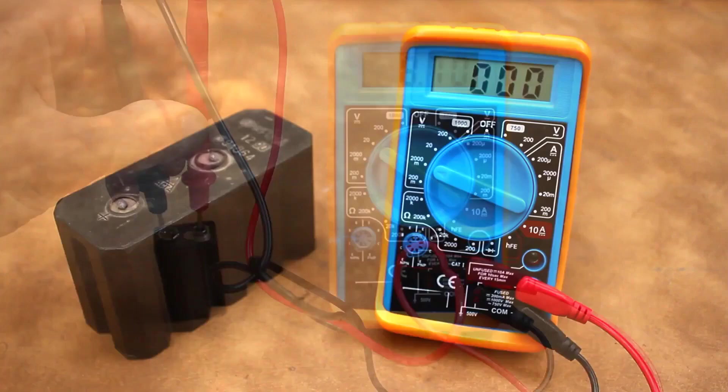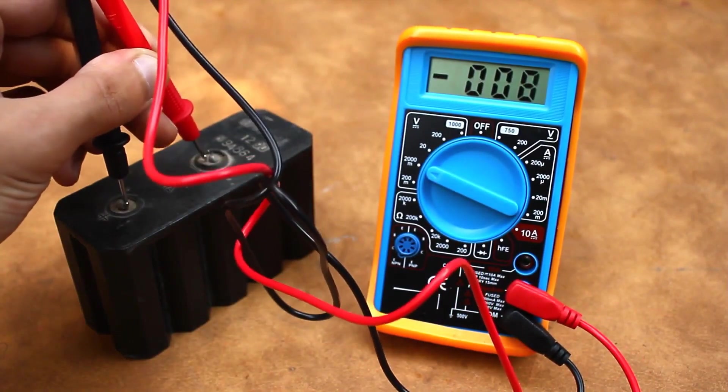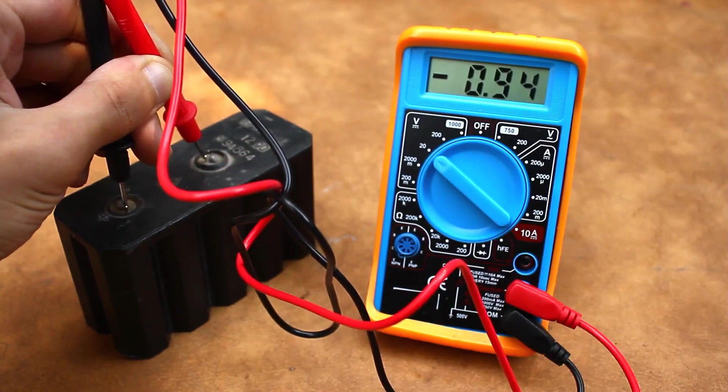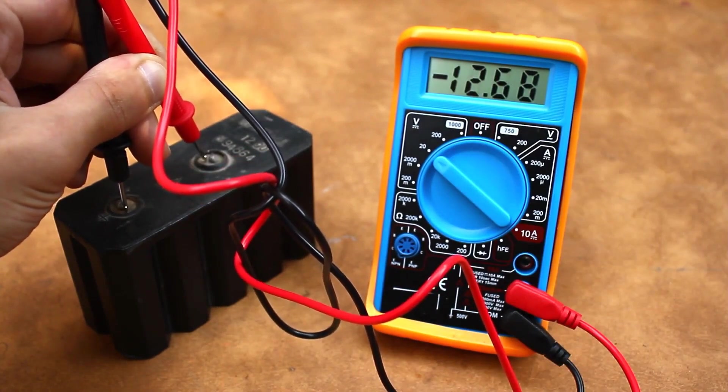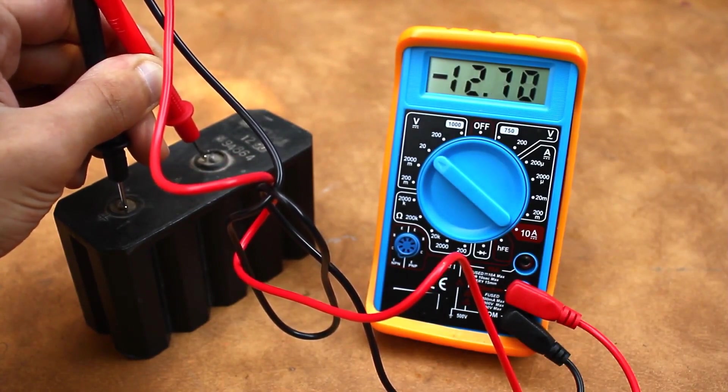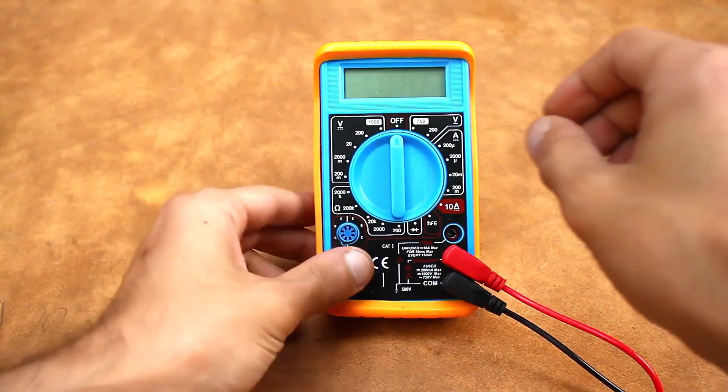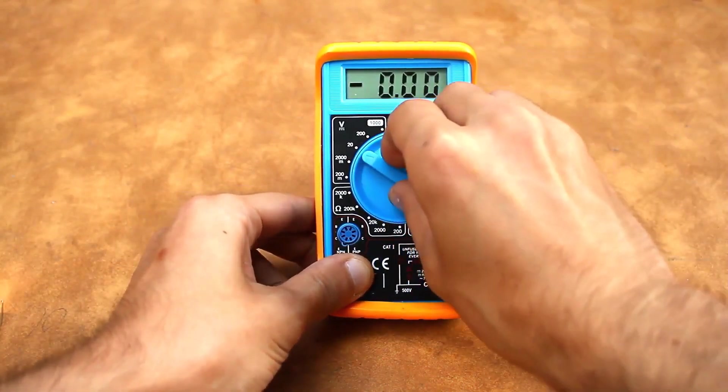But if you're measuring the voltage of an unknown source, you need to choose the range blindly. If the device goes off the scale, you need to increase the range by one step. The accuracy of the measurements depends on the correctly chosen range.